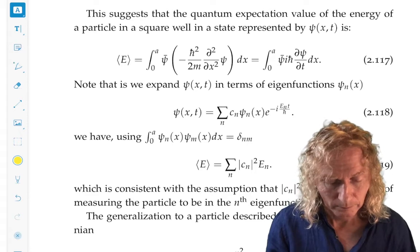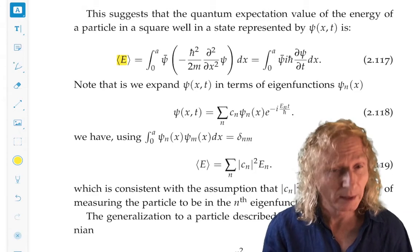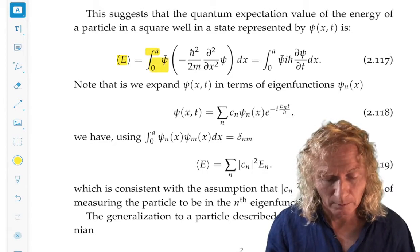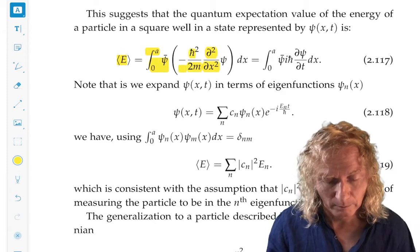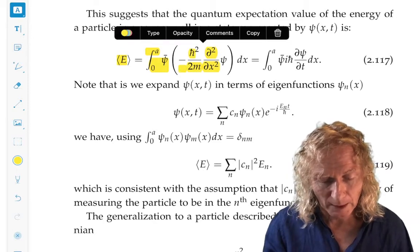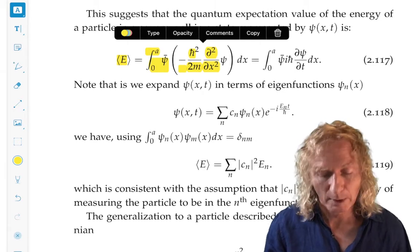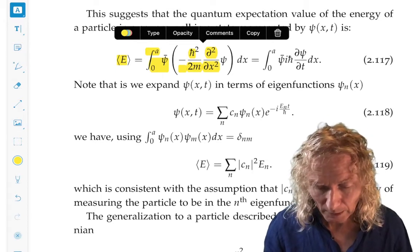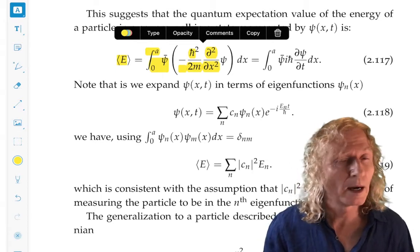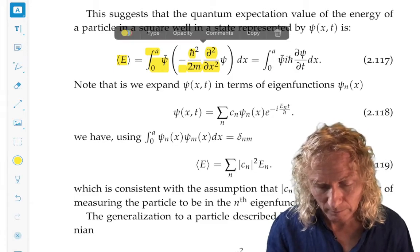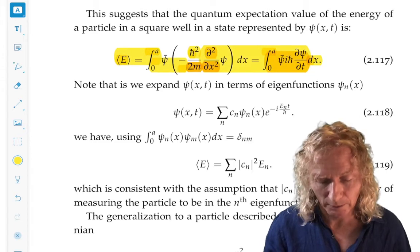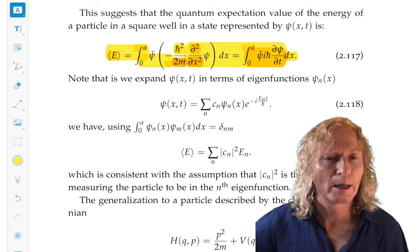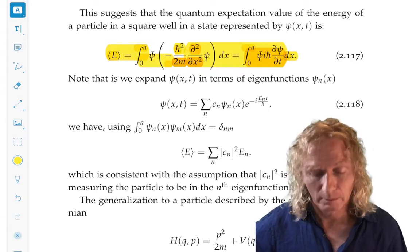Well, for the square well, expectation value of energy for the system in the state psi of x and t - we have psi bar, we put the energy operator in between psi bar and psi and integrate it over the domain. Well, for the energy operator, V is zero for the square well, that's psi bar i h bar d by dt acting on psi. This is important to relate these two.